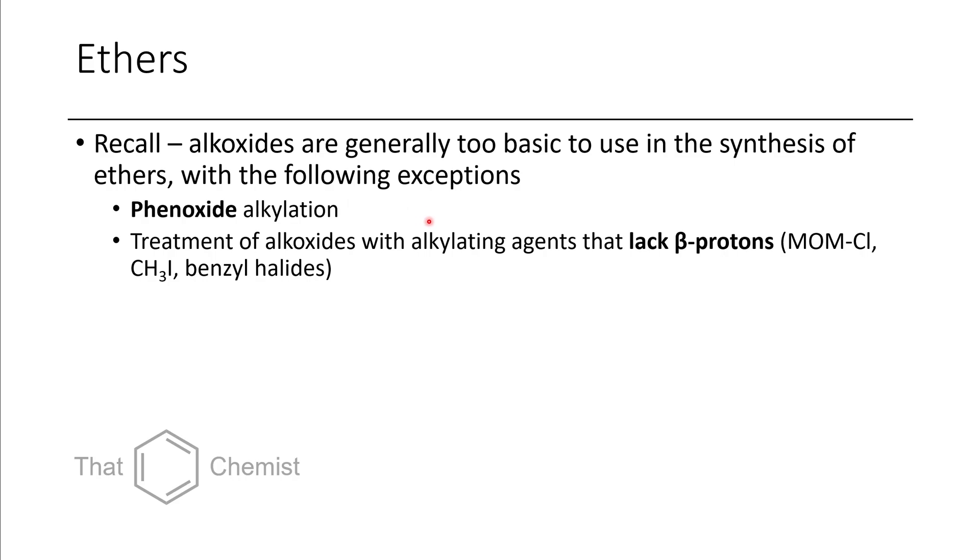If you were to treat other alkoxides, ones derived from aliphatic alcohols, alkyl alcohols, it is possible to alkylate them with alkylating agents that don't possess beta protons. So the next lecture we're going to be talking about E2 elimination, and E2 elimination occurs when you have a leaving group on a carbon adjacent to another carbon with alpha protons. If we take something like mom chloride or iodomethane or a benzyl halide, while you can substitute the halide, it doesn't have the possibility of undergoing any subsequent elimination.